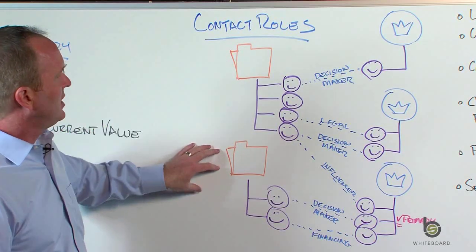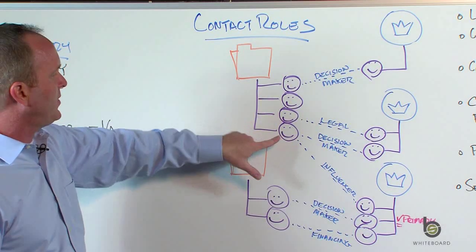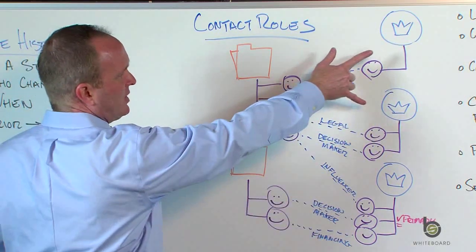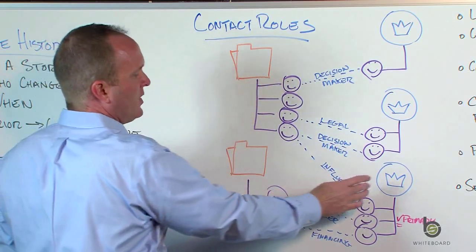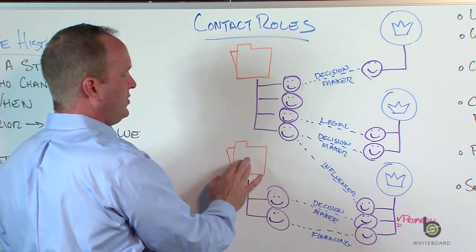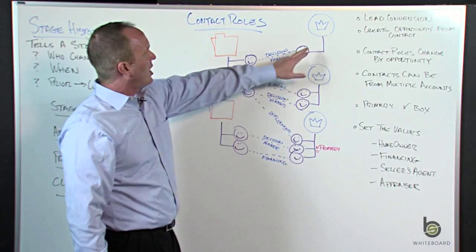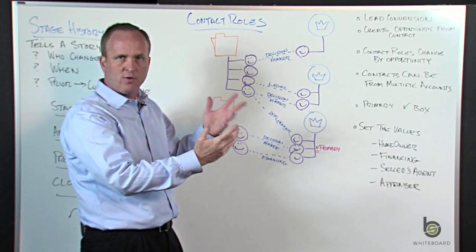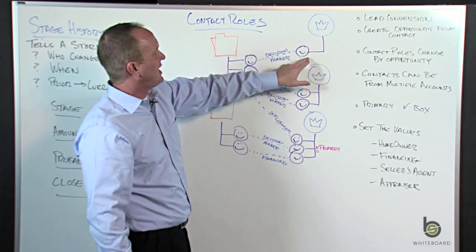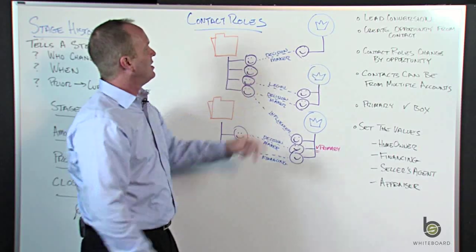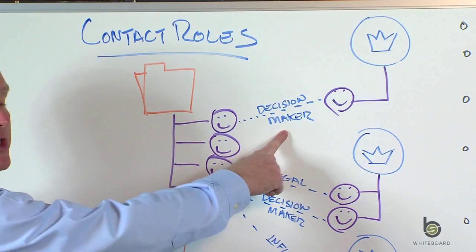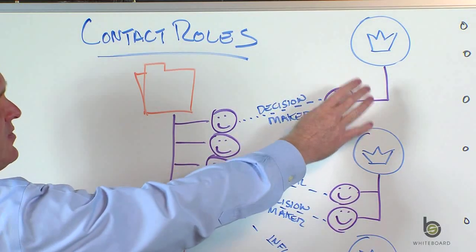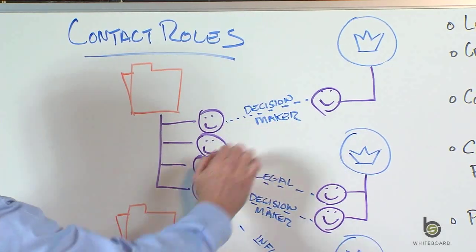So we have two accounts and we have our contacts — these little purple people below that. And these big blue circles are opportunities. We've got two opportunities that are related to this account or this company, and another opportunity that's related to this other account. On the opportunity there's a related list where you can add people in a contact role — how they play on the deal. On this opportunity we've added one contact; they are in the role of decision maker.